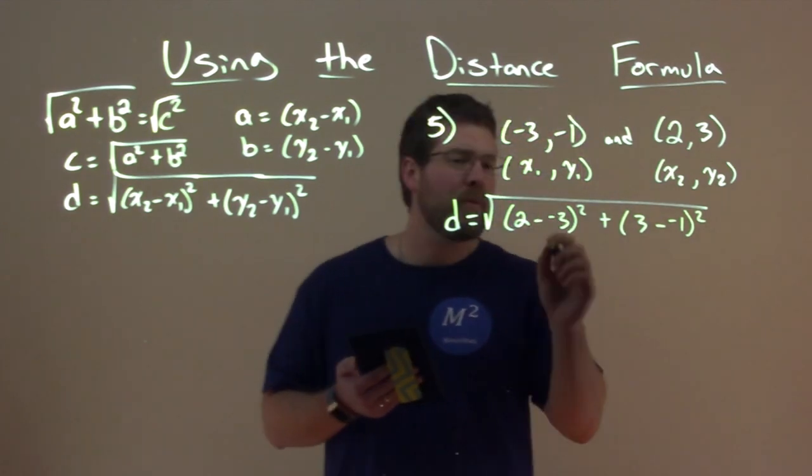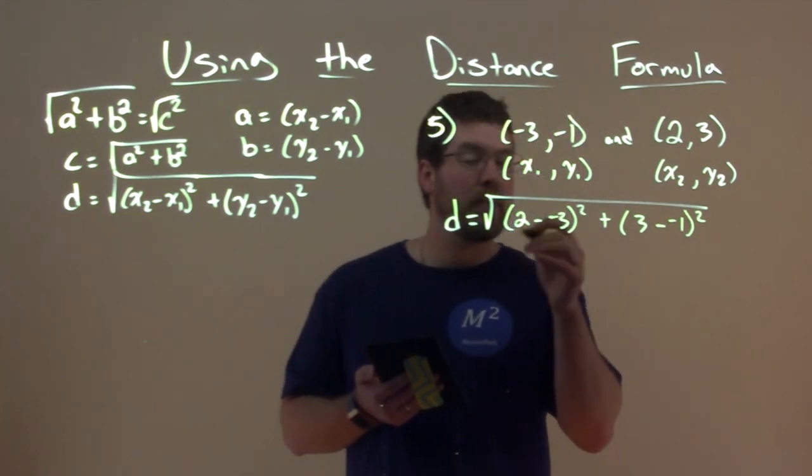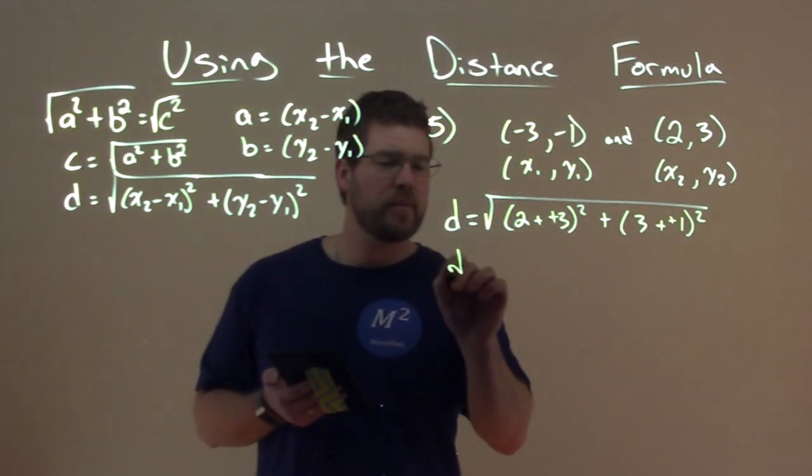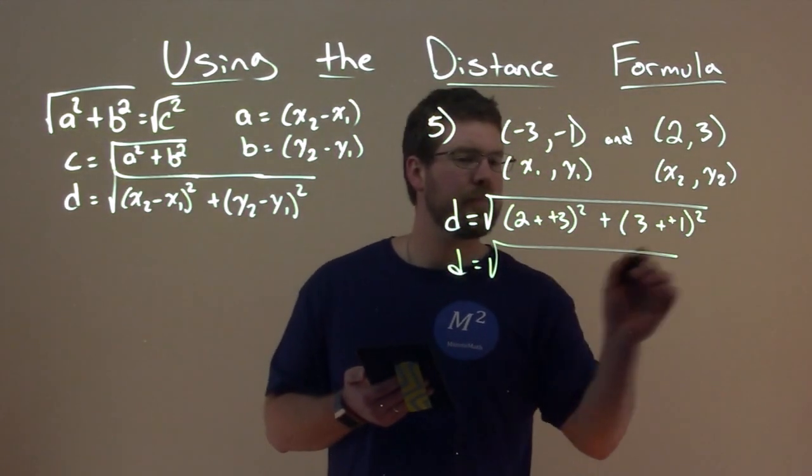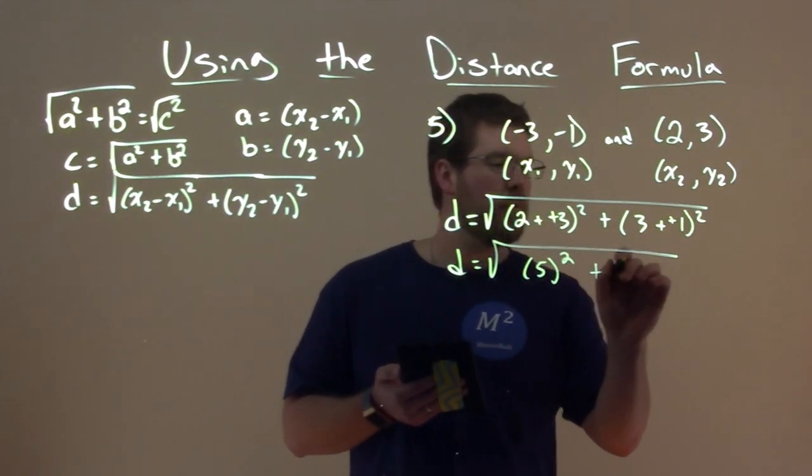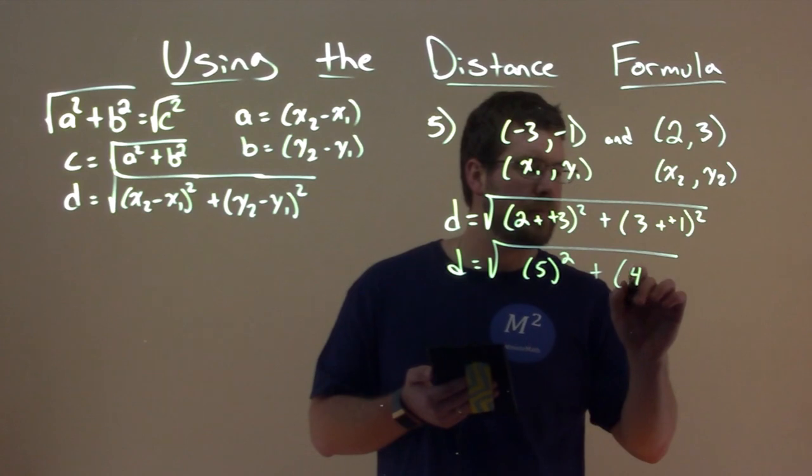And if you want to put extra parentheses in there, you can. Just make sure you know the two negatives make a positive. So we have plus positive here, and then plus positive. So we simplify this. Let's take our time. 2 plus 3 is 5, squared, plus 3 plus 1 is 4, squared.